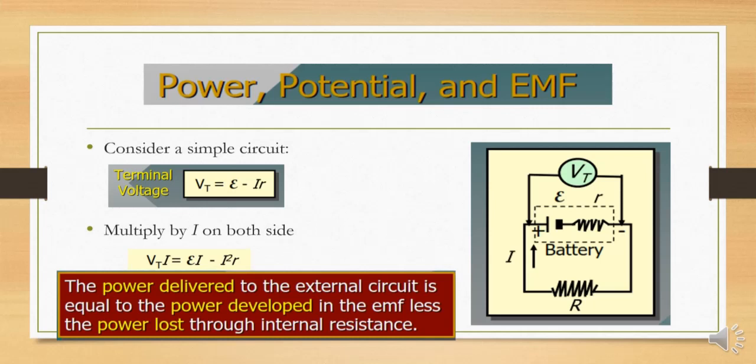The power delivered to the external circuit equals the power developed by the EMF less the power lost through internal resistance. Whatever energy is dissipated inside the battery — such as the battery heating up — is of no use. But the power dissipated across the load resistance can be utilized in the form of light and heat.